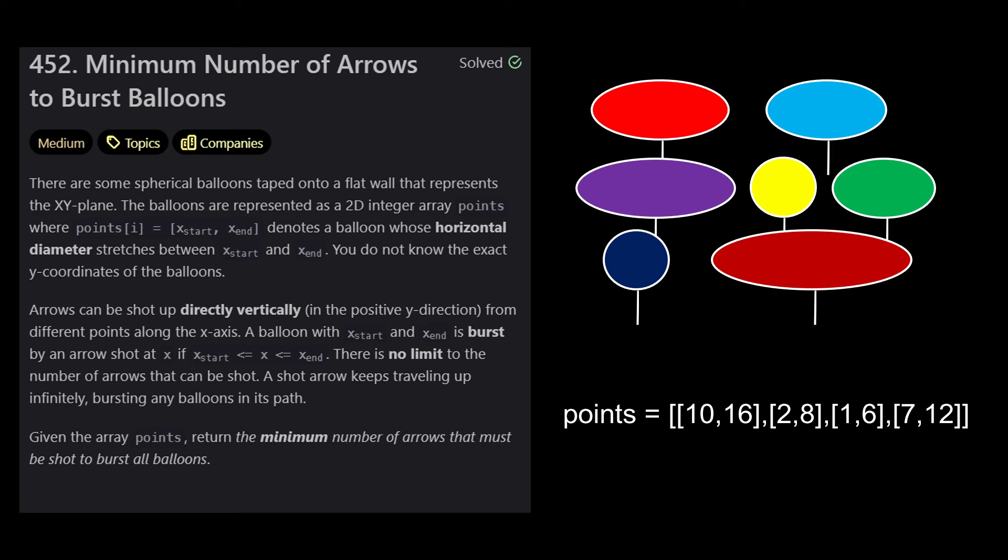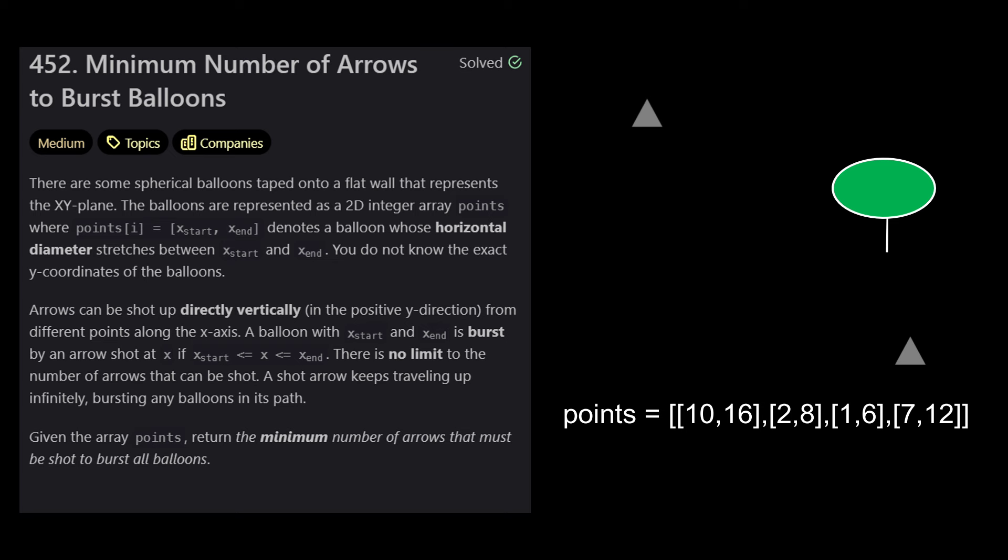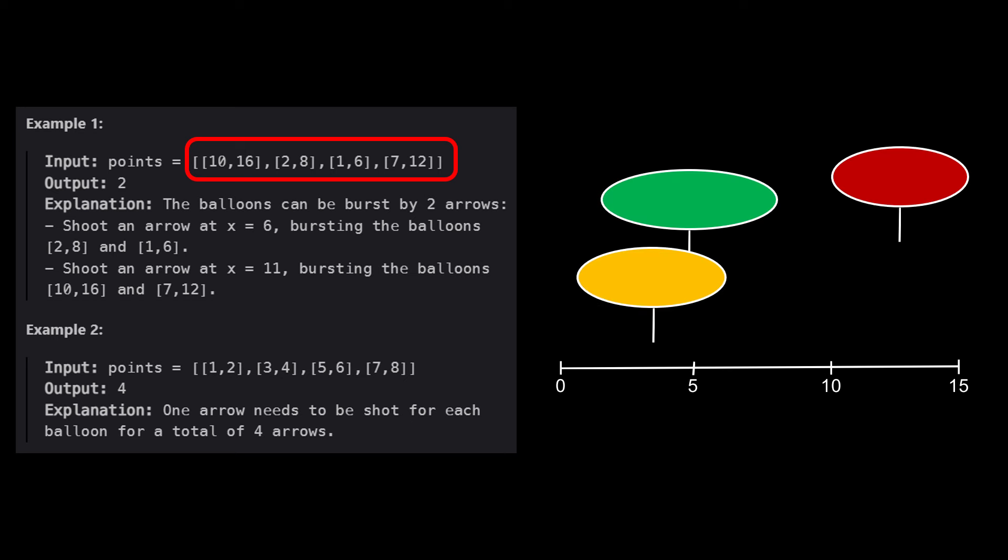Arrows can be shot up directly vertically, popping all balloons that it touches. Given the array, calculate the minimum number of arrows that must be shot to burst all balloons. In example 1, the 4 balloons represented by 10-6, 2-8, 1-6, 7-12 can be popped using 2 arrows, one fired at 6 and one fired at 12.